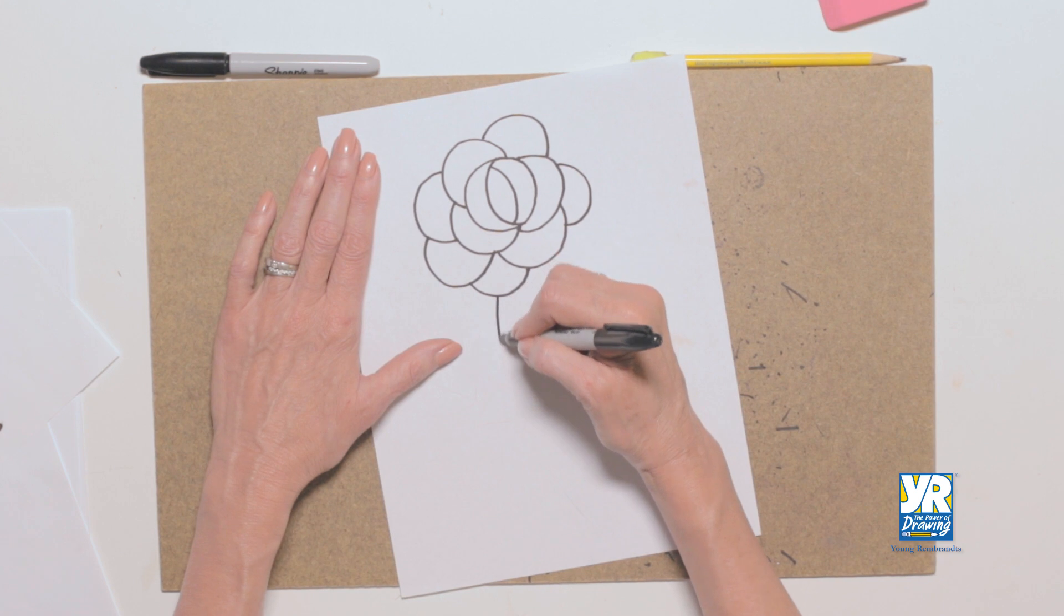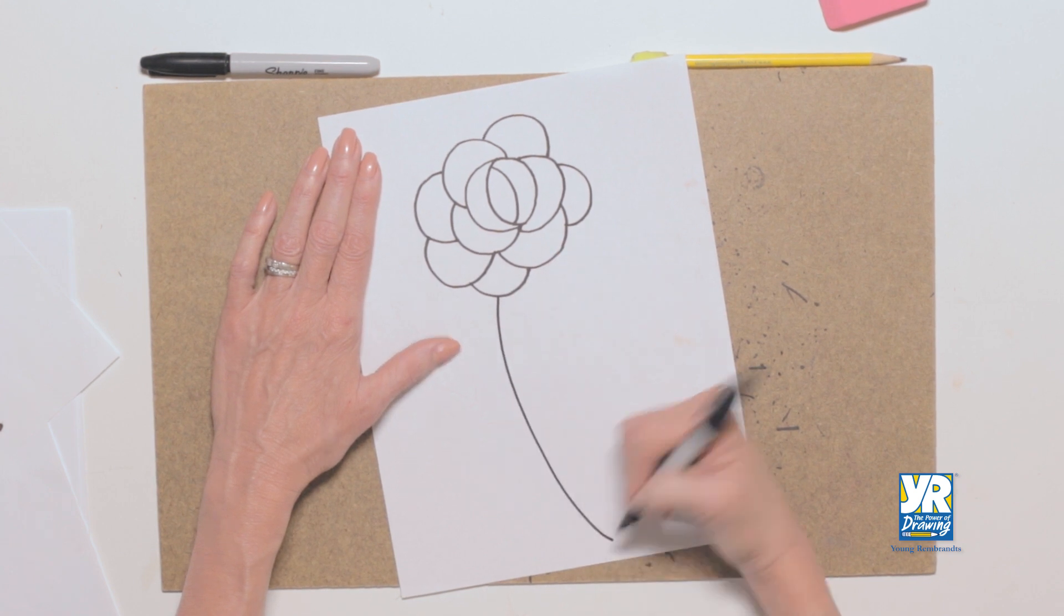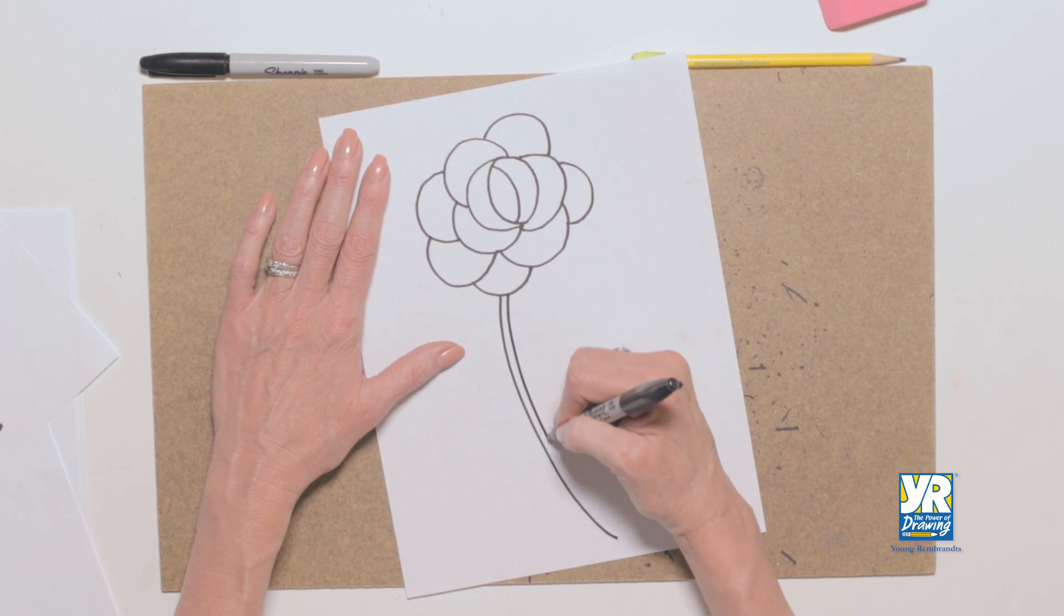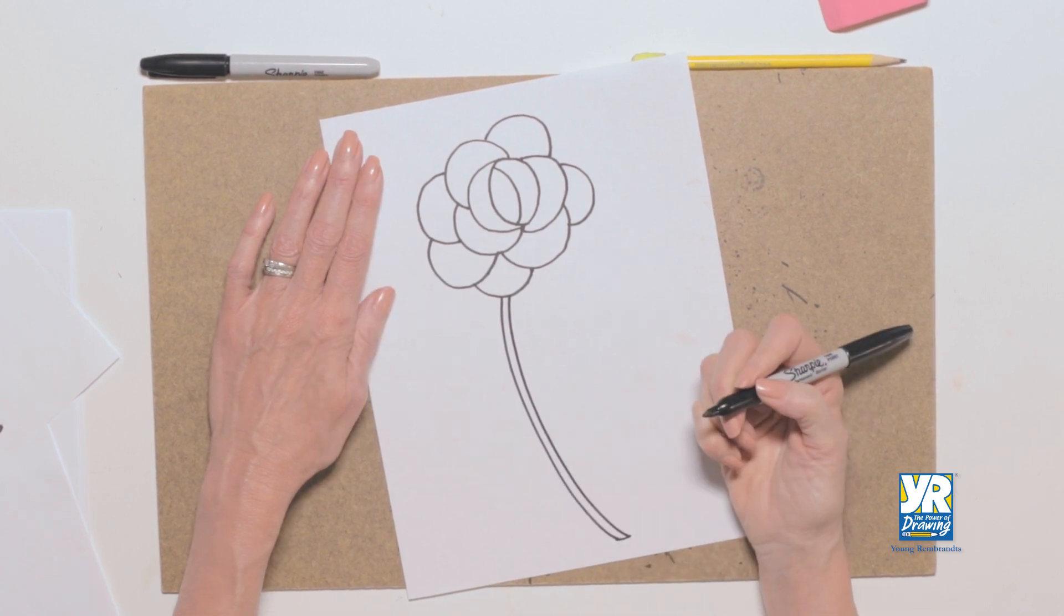So now get our stem. I'm gonna go down. But we want to keep this really thin because it's the stem of a flower, not a tree trunk. Okay, there we go.